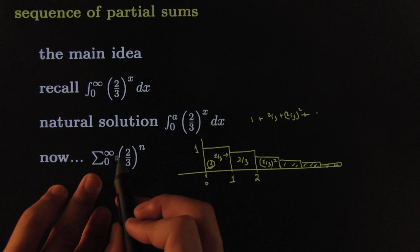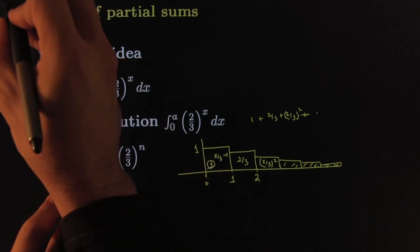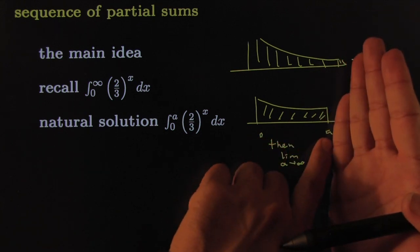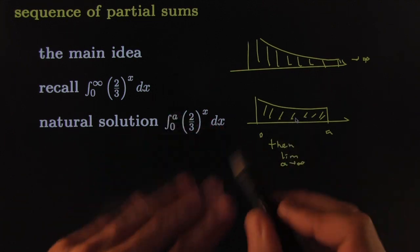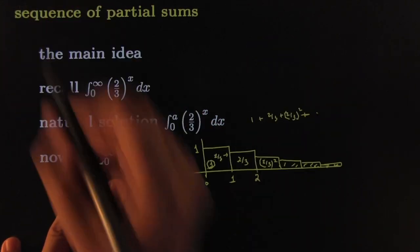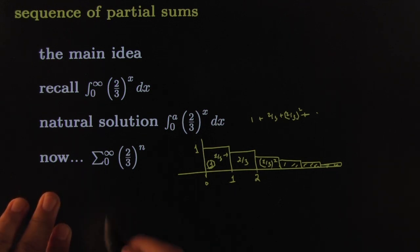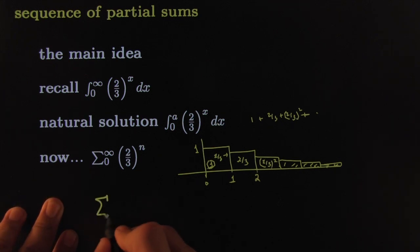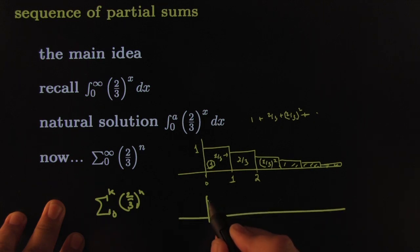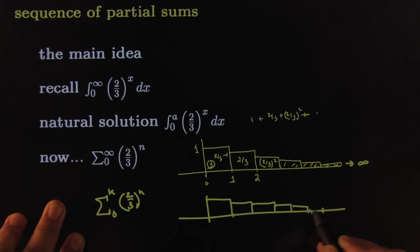There's an immediate connection between the infinite series and the improper integral from the previous chapter. The solution is exactly the same: instead of going all the way to infinity, stop somewhere at k and compute the sum from zero to k. We call this a partial sum — you're only adding the first k terms.